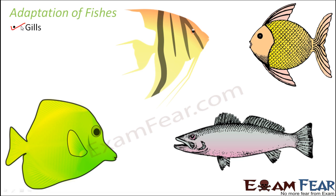Gills are the first special structure of fishes. They help fishes take in oxygen dissolved in water. Every organism needs oxygen — we breathe in air to take oxygen, which helps convert food into energy. Without oxygen, the food we eat will not get converted to energy. That requirement is true for fishes as well. They also need oxygen, but since they live in water and are not exposed to air, they have these special structures called gills that help them take in the oxygen dissolved in water.